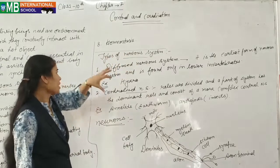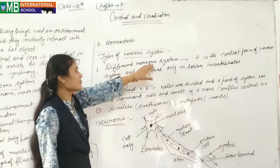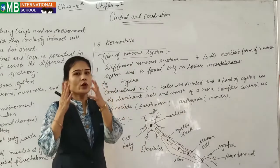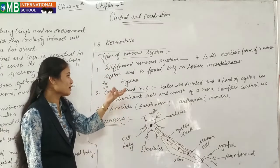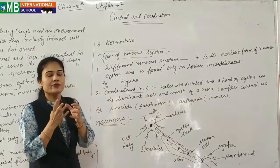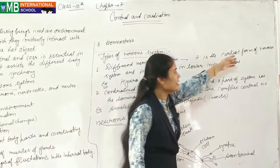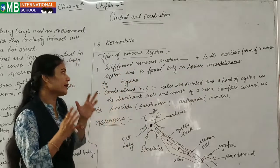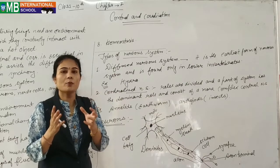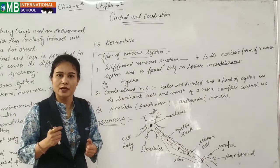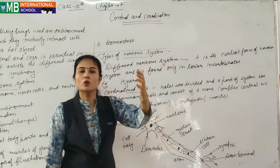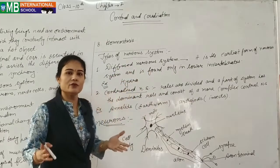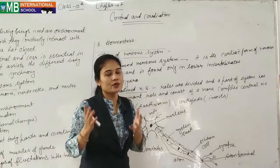Now we are looking at the types of nervous system. There are two types: the first is the diffuse nervous system, and the second is the centralized nervous system. The diffuse nervous system — the word diffuse means scattered. It is the earliest form of nervous system and is found only in lower invertebrates, which do not have a particular organ system or tissue system in their body. They have a scattered nervous system.